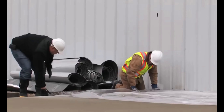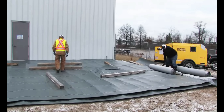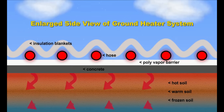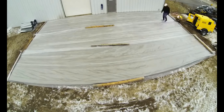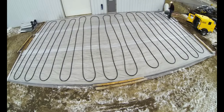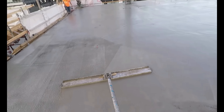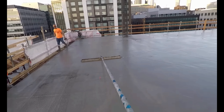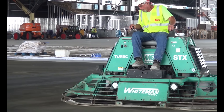Once the concrete is placed and compacted, it needs to be cured. Curing is the process of maintaining adequate moisture and temperature conditions to allow the cement to hydrate and gain strength gradually. This typically involves keeping the concrete damp or covering it with curing membranes, blankets, or plastic sheets. Curing can last for several days or weeks, depending on the type of concrete and the desired strength. After the concrete has cured sufficiently, various finishing techniques can be applied to achieve the desired surface texture and appearance, including smoothing, leveling, troweling, or applying decorative finishes.